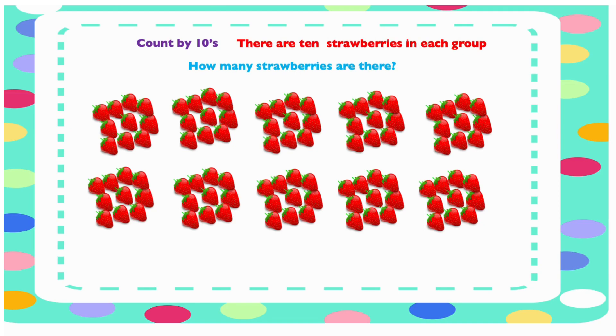Here we have strawberries. How many strawberries are there in the picture? We have groups of strawberries. Let's count them. We are counting in tens. Let's find out how many there are all together. Each group is 10. Let's count.